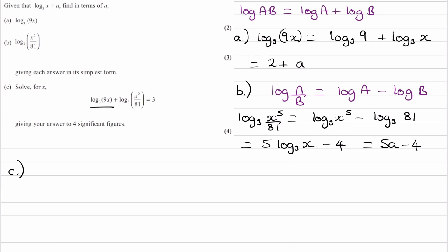So log to the base 3 of 9x, we've worked that out to be 2 plus A. Again, A is equal to log to the base 3 of x. And the log to the base 3 of x to the power of 5 over 81, that becomes 5A minus 4. This is equal to 3. And the left hand side then becomes 6A minus 2 is 3.